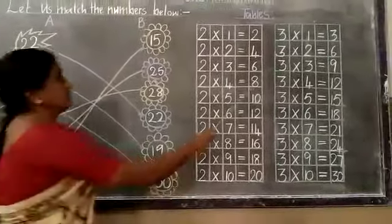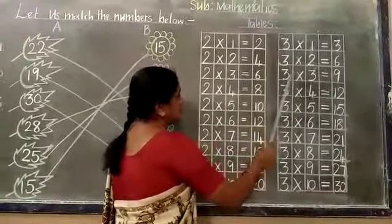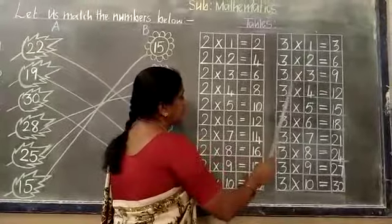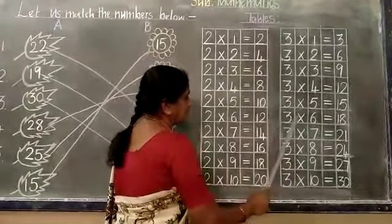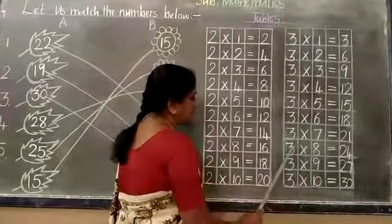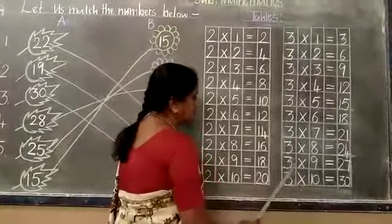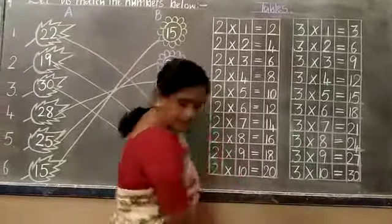One second children. 3 ones are 3. 3 twos are 6. 3 threes are 9. 3 fours are 12. 3 fives are 15. 3 sixes are 18. 3 sevens are 21. 3 eights are 24. 3 nines are 27. 3 tens are 30.